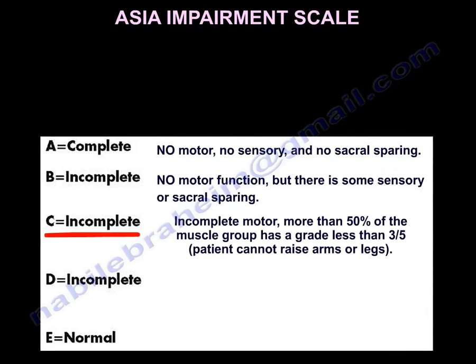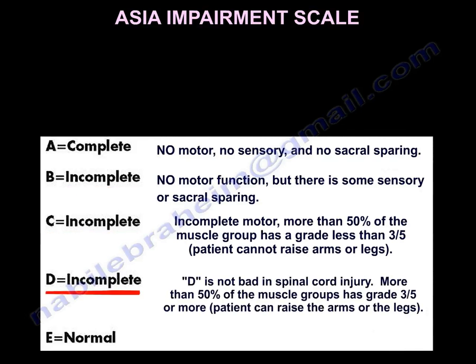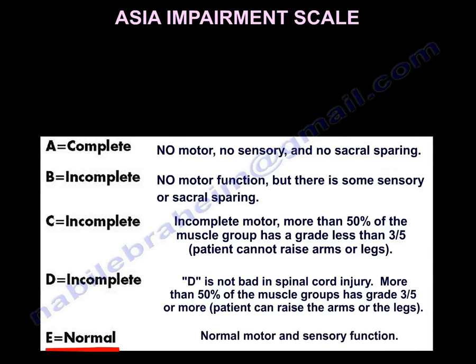With grade C, the patient cannot raise their arms or legs. Grade D — in college, D is bad, but in spinal cord injury, D is not bad. More than 50% of the muscle groups have a grade of 3 out of 5 or more, so the patient can raise their arms and legs. Grade E is normal motor and sensory function.